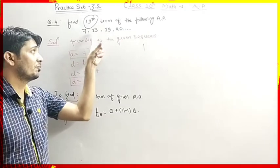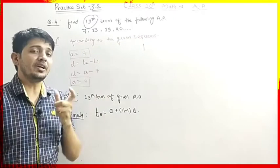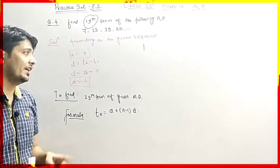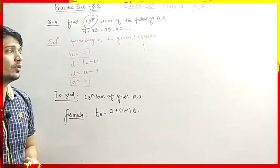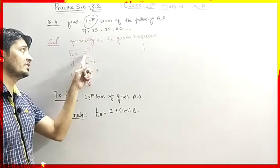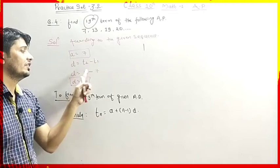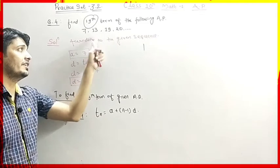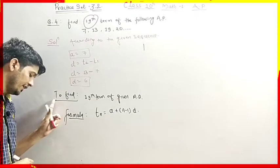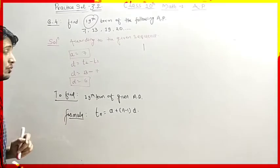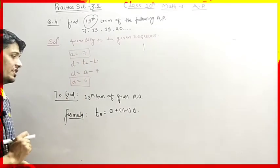In question 4, it is already given that the progression is in Arithmetic Progression, so every time we do not have to find the common difference from scratch. By taking any two consecutive terms we can calculate D. The first term A is 7, and D equals T2 minus T1, which is 13 minus 7 equals 6. We have to find the 19th term.